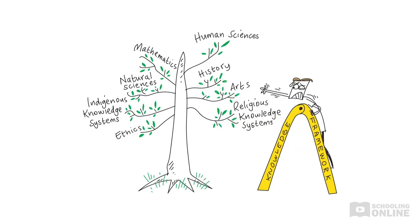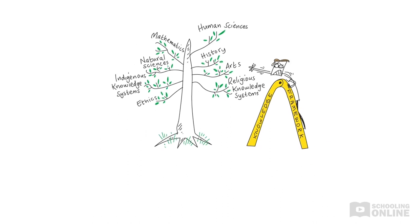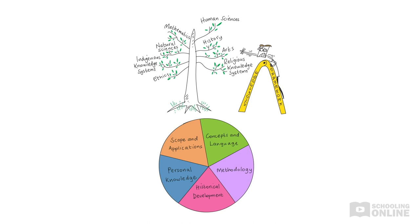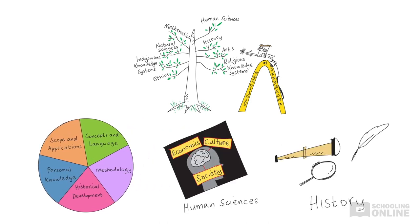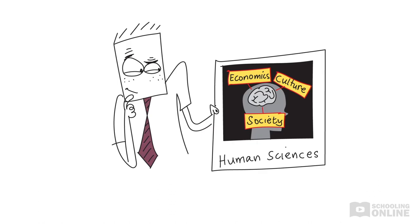Now let's check out the key ideas in each area of knowledge using this helpful knowledge framework. Along the way, we'll explore links between specific areas of knowledge and analyse the similarities and differences between them. Let's dive into the human sciences.